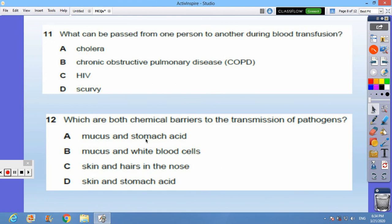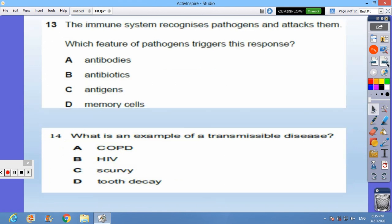Question 12: which are both chemical barriers to transmission of pathogen? A, mucus and stomach acid. Question 13: the immune system recognizes pathogens and attacks them. Which features of pathogens trigger this response? C, antigens.